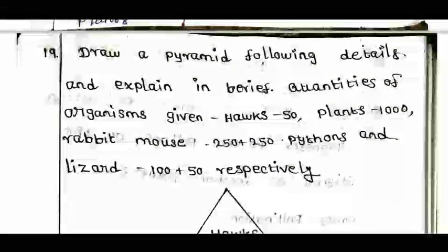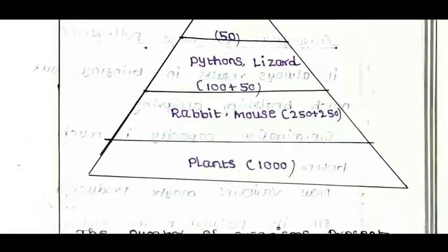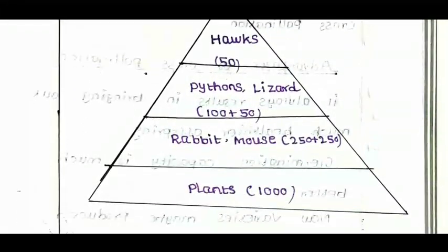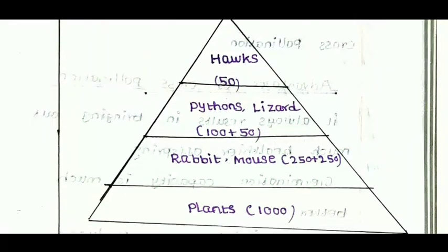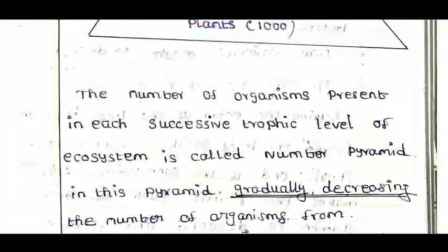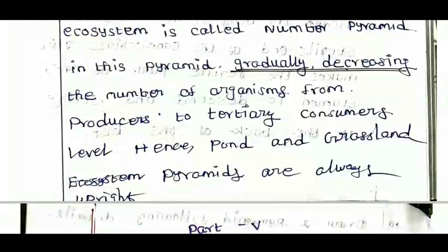Draw the pyramid of the following details: plant is 1000, rabbit and mouse are 250 each, python and hawks are 50. This is the reason for this type of pyramid — this is the pyramid of numbers.